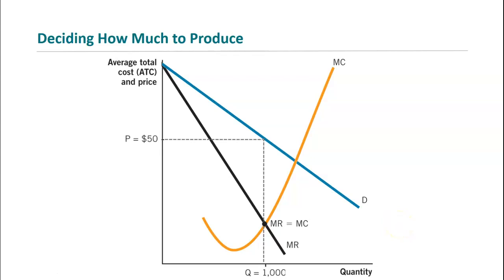The story for how a monopolist decides what to produce is very similar to how a firm in a perfectly competitive market decides what to produce. You decide based on where profit is maximized, and profit is always maximized where marginal revenue equals marginal cost. You don't want to go past that point because your cost of production exceeds what you gain, and you don't want to stop earlier because you could still increase profit.